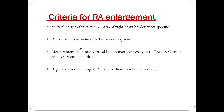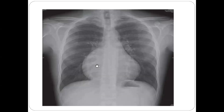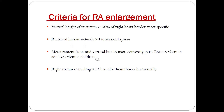Third criterion: measurement from the mid-vertical line to maximum convexity of the right border — more than five centimeters in adults, and more than four centimeters in children. From the spine, if this distance is more than five centimeters in adults and more than four centimeters in children, we can call it right atrial enlargement.